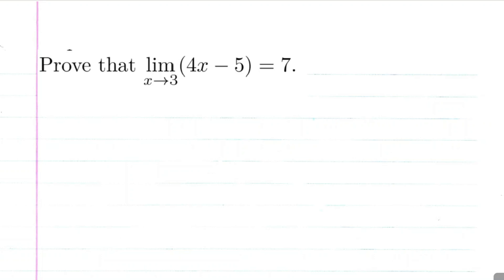We're going to prove that the limit as x approaches 3 of 4x minus 5 is equal to 7, by using the epsilon-delta argument.